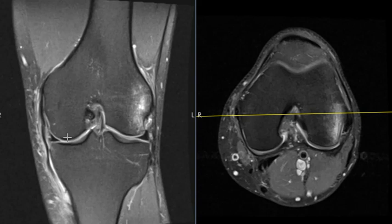On this side we have a medial femoral condyle and the medial tibial plateau down here, and this is the medial meniscus. The medial meniscus doesn't look quite right. The lateral meniscus is a beautiful triangle — the outside of it is sharp and vertically oriented. On the medial side we see a little bit of irregularity along the outside. This is called the capsular surface. Here's the superior articular surface, inferior surface, and this is the peripheral rim or capsular surface.